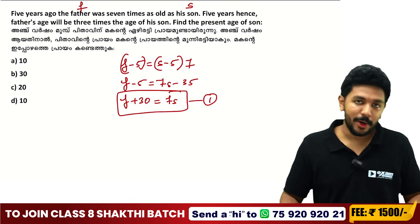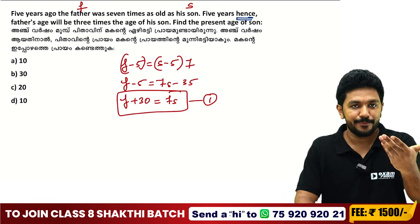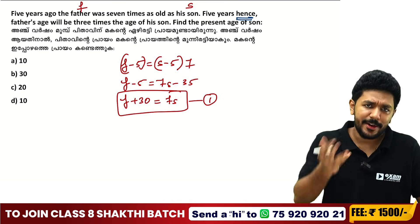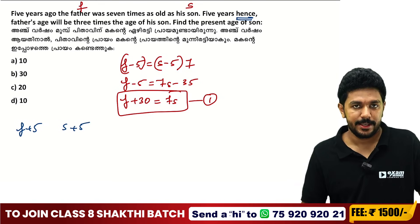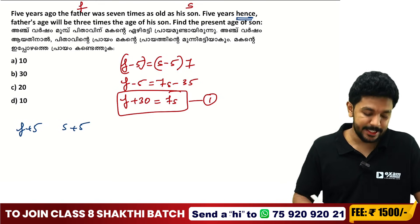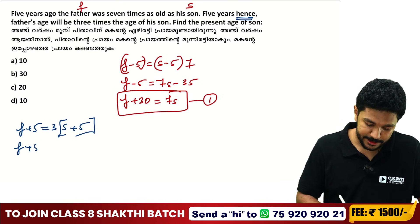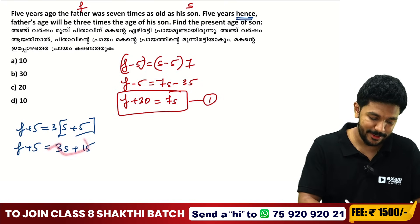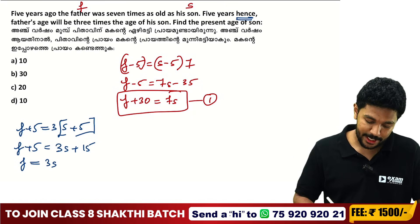The second equation: 5 years hence, father's age is F plus 5 and son's age is S plus 5. Father's age will be 3 times son's age: F plus 5 equals 3 times S plus 5, which gives F plus 5 equals 3S plus 15, so F equals 3S plus 10. That is our second equation.